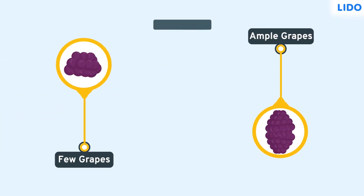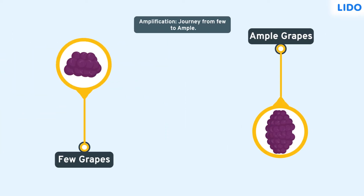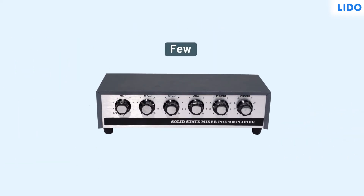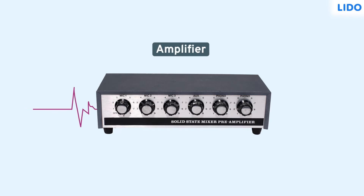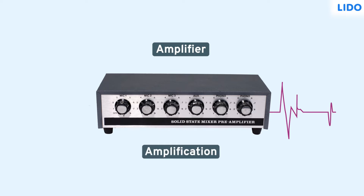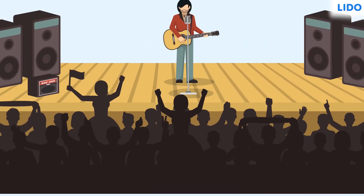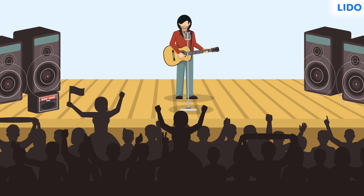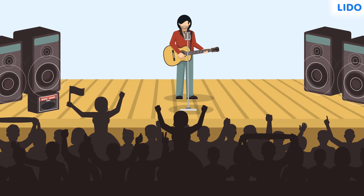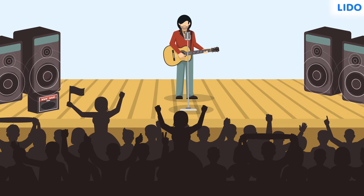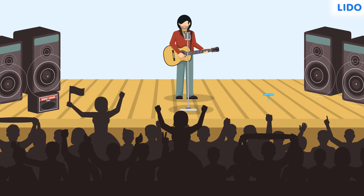In classical English, this journey of quantity from a few to ample is called amplification. The device with which you turn a few into ample is called an amplifier, and the mechanism with which this is done is called amplification. Loudspeakers are also called amplifiers because they make sound louder to reach a larger audience or an ample crowd.